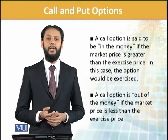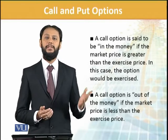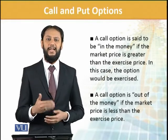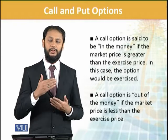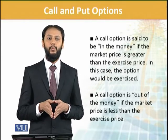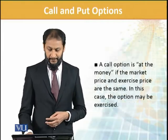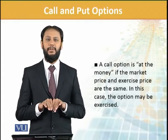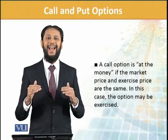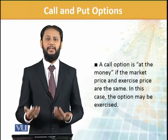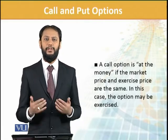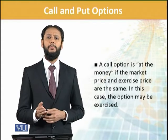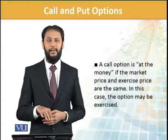A call option is 'out of the money' if the market price is less than the exercise price. If the market price is $5, we say it is out of the money — no one would exercise it because it doesn't make sense. It could move in the money later, but at that point it is out of the money. If both are equal — market value and strike price are the same — then the option is 'at the money.' In that case you may or may not exercise; it's your choice, since the rate is the same either way.